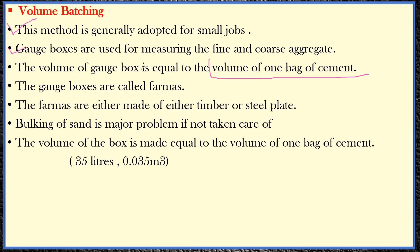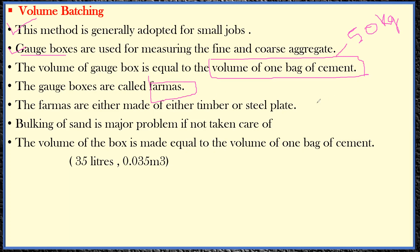One bag of cement available in the market weighs 50 kg. The gauge boxes are also called firmas, and they are made either from timber such as plywood, or from steel plates. The problem with volume batching is that bulking of sand takes place. Bulking of sand means that when sand absorbs moisture from the atmosphere, its volume increases.